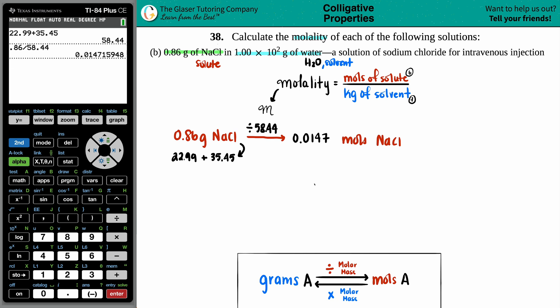Sure. Okay. Top part is done. Now let's get the kilograms of the solvent. They gave us 1.00 times 10 to the second grams of the water. So I got to go to kilograms of H2O. Grams to kilograms, that is dividing by 1,000.